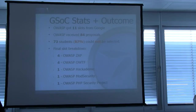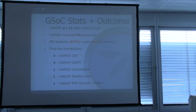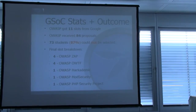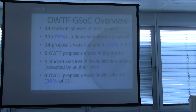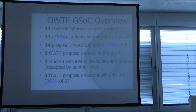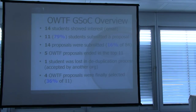The final slot breakdown was that OWTF and SAP got four slots each, with projects including Academic, ModSecurity, and PHPSecurityProject. In the Google Summer of Code overview for OWTF students, 14 showed interest, but only 79% — 11 students — bothered to submit a proposal. 16% of OWASP proposals were for OWTF. We got five in the top 11, but lost one student who was accepted by both OWASP and another organization, so we ended with four students.